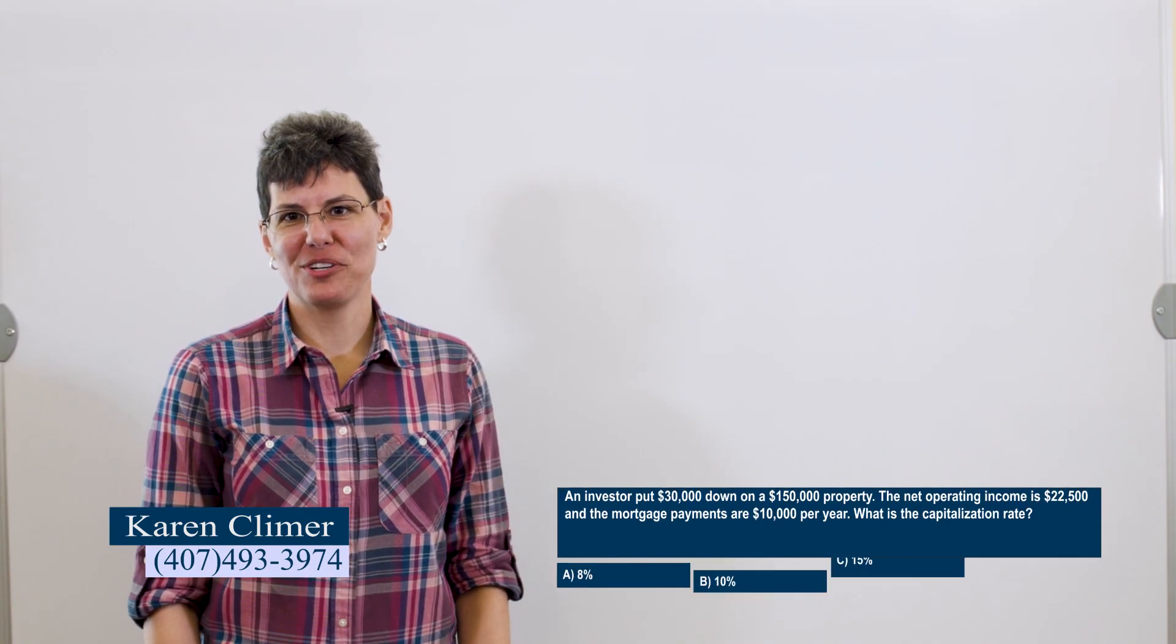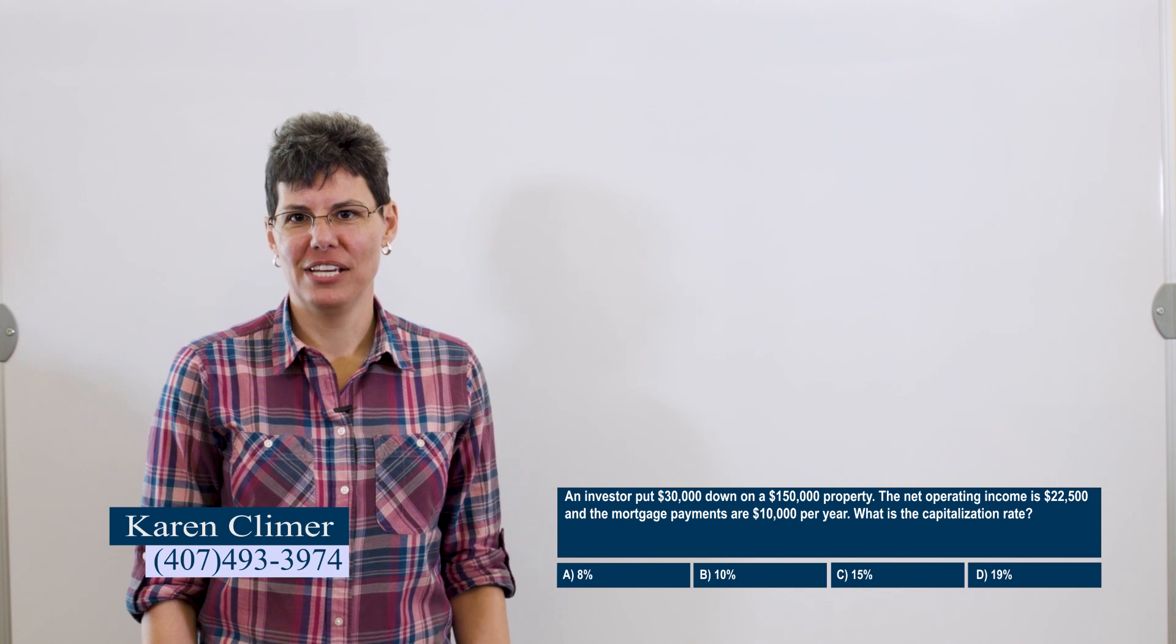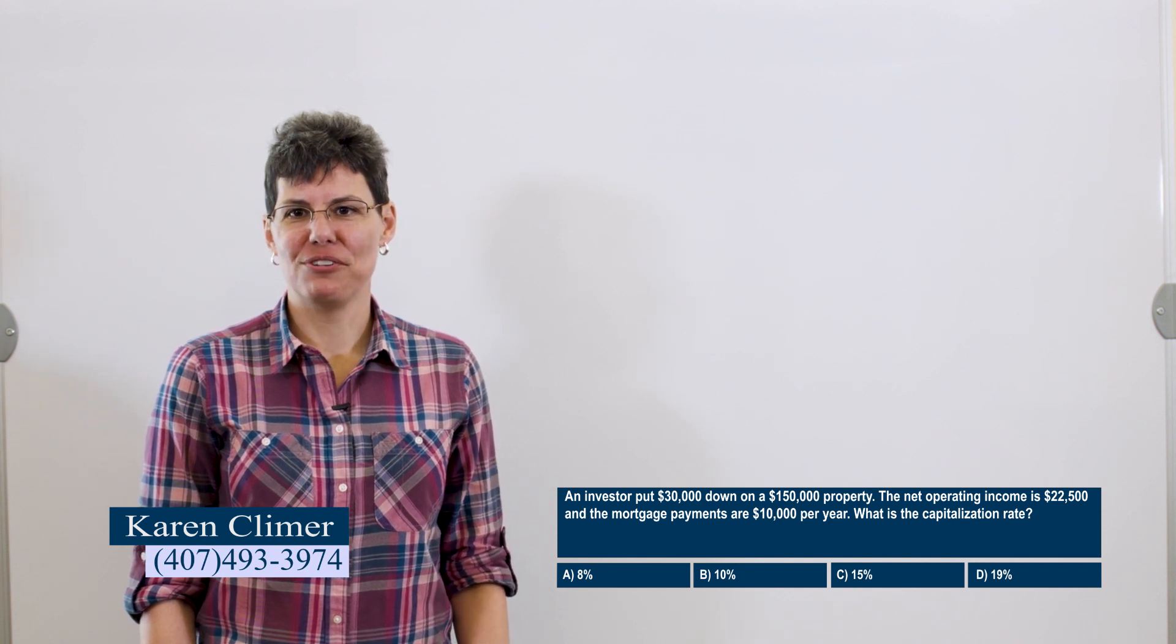An investor put $30,000 down on a $150,000 property. The net operating income is $22,500 and the mortgage payments are $10,000 per year. What is the capitalization rate?